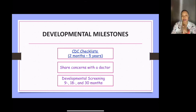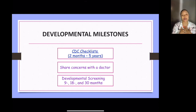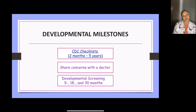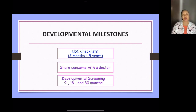Be sure to share any concerns with your doctor. Don't feel shameful or embarrassed — the sooner you can get them supports, the better. There are developmental screenings for autism available as early as nine months, 18 months, and even 30 months. If you don't think your doctor is checking for that, you can ask for them to screen for autism early on. Please don't wait — the sooner the better.